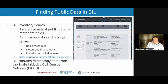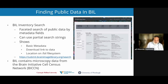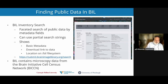Specific data in BIL may be searched for using faceted metadata searching, which shows the location of the data, a download link to the data, and the location that you will find the data on our computing platforms. The majority of data currently in BIL results from work done by the BRAIN Initiative Cell Census Network investigators, one of the main results of which is a series of joint analysis projects.